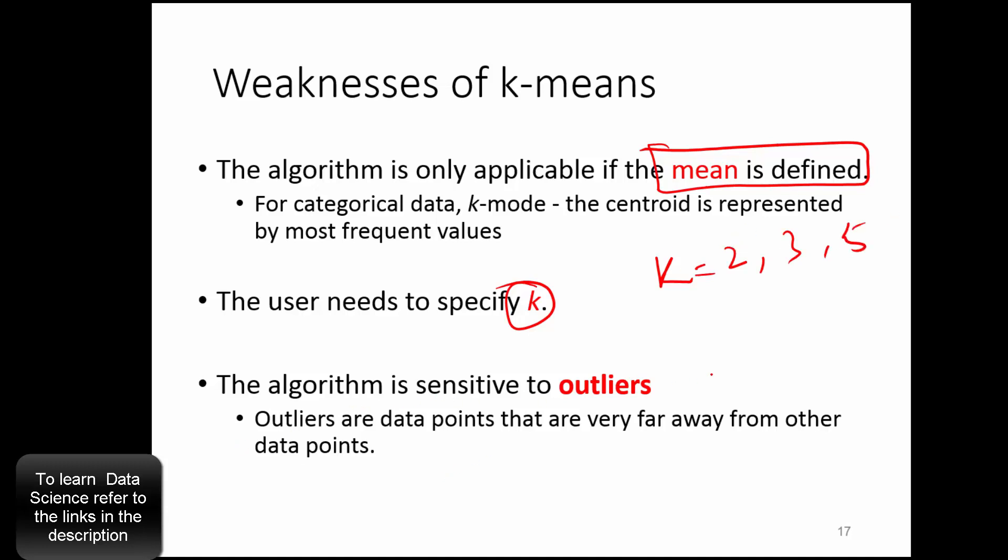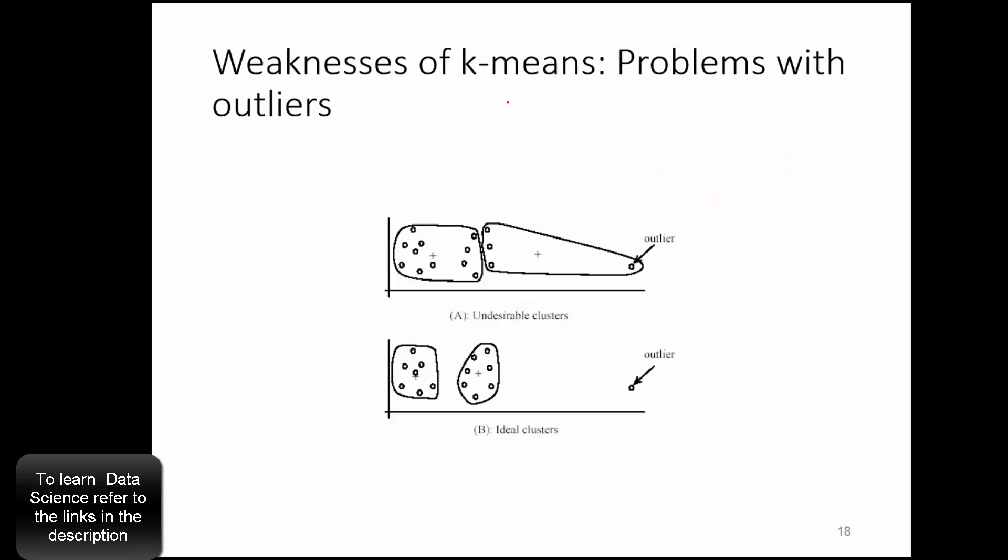The algorithm is very sensitive to outliers. That means when you have extreme observations or observations which are very different from the rest of the observations or very far away from other data points, then the algorithm doesn't perform well. We'll take an example to show you how that affects.